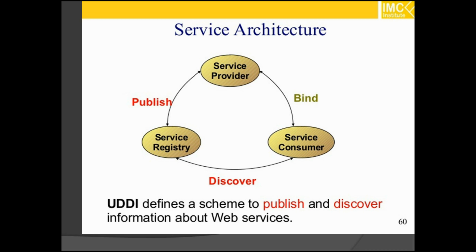Every framework needs some sort of architecture to make sure the entire framework works as designed. Similarly, in web services, the architecture consists of three distinct roles: a provider, a requester, and a broker — also called a consumer. Whatever the service consumer takes from the service registry, it will bind with it and finally publish.